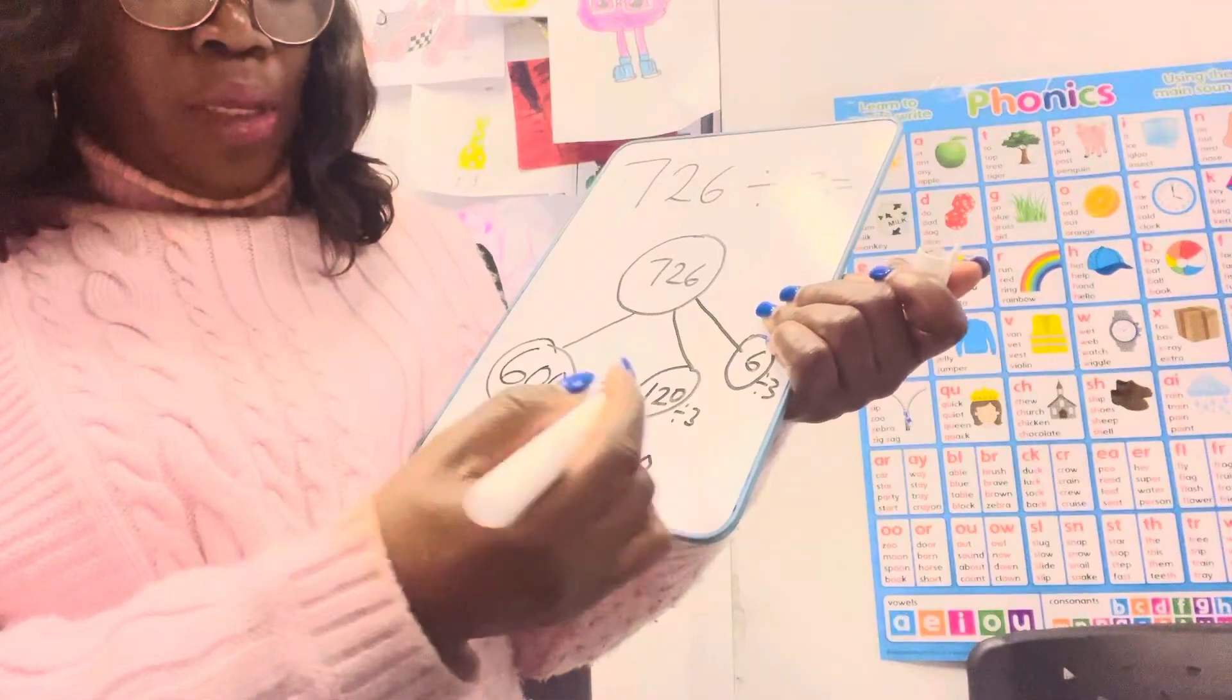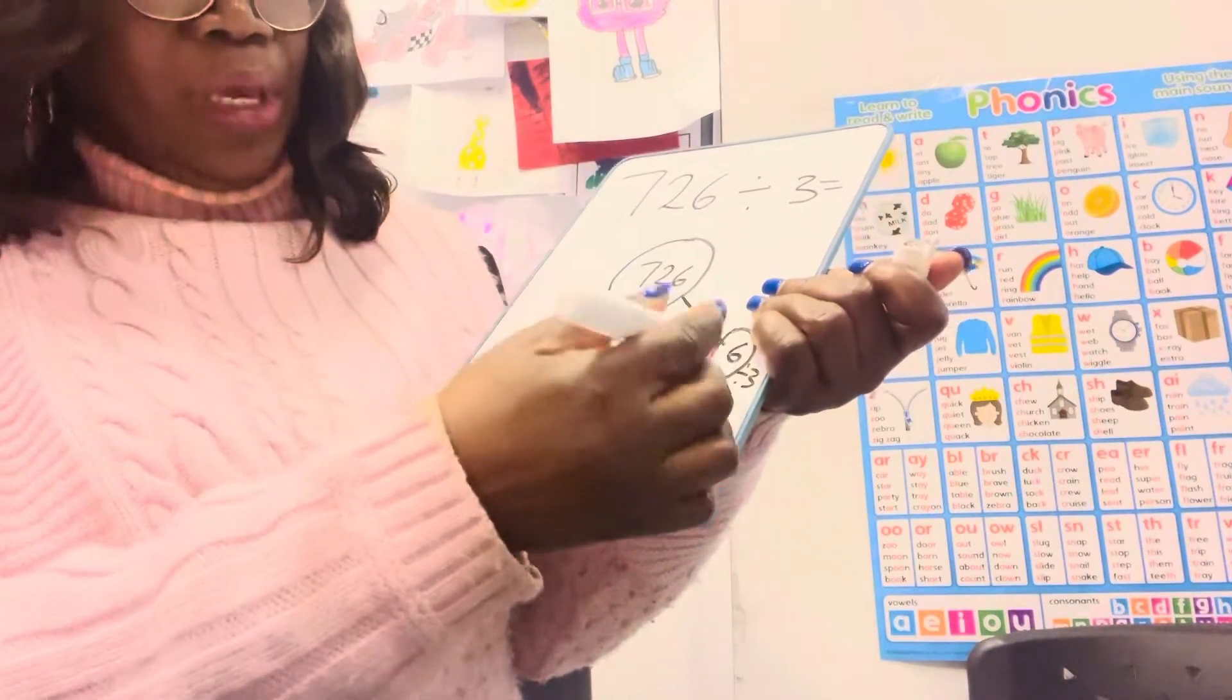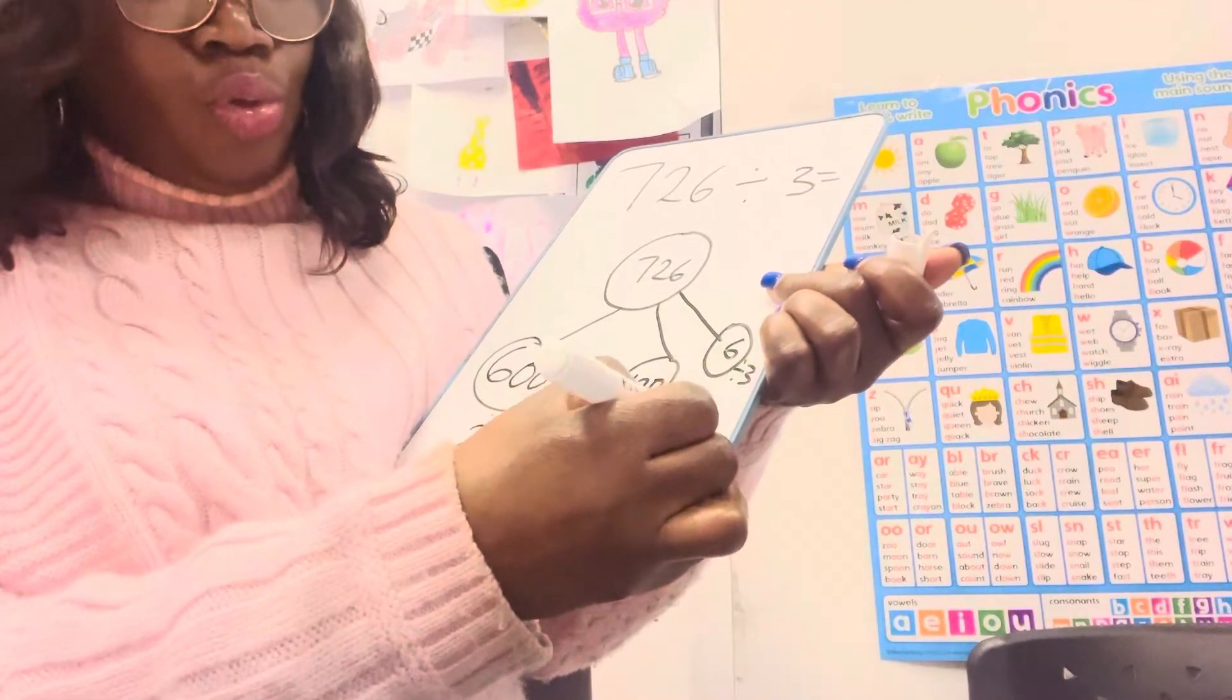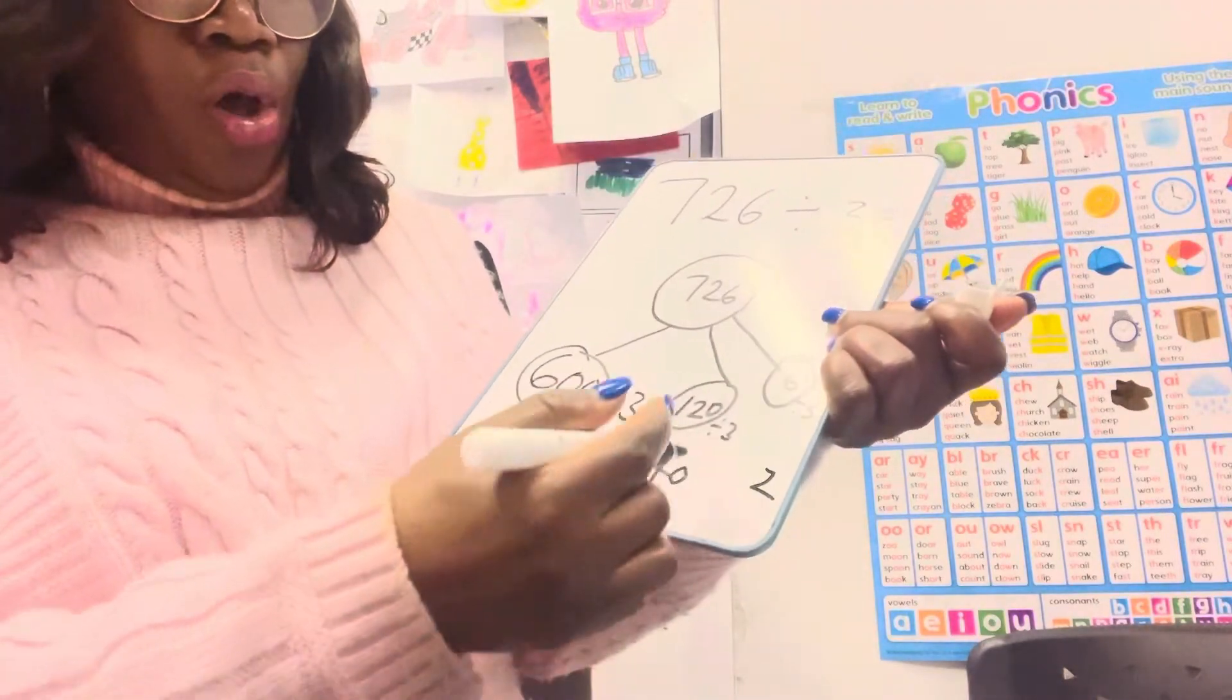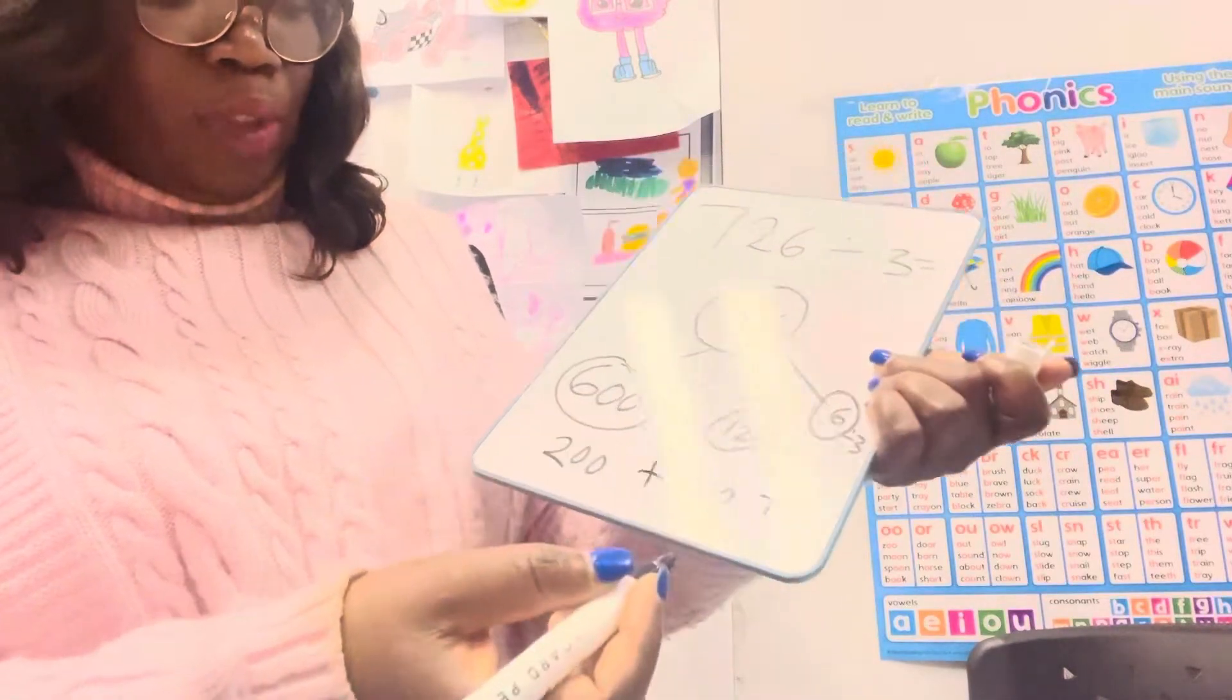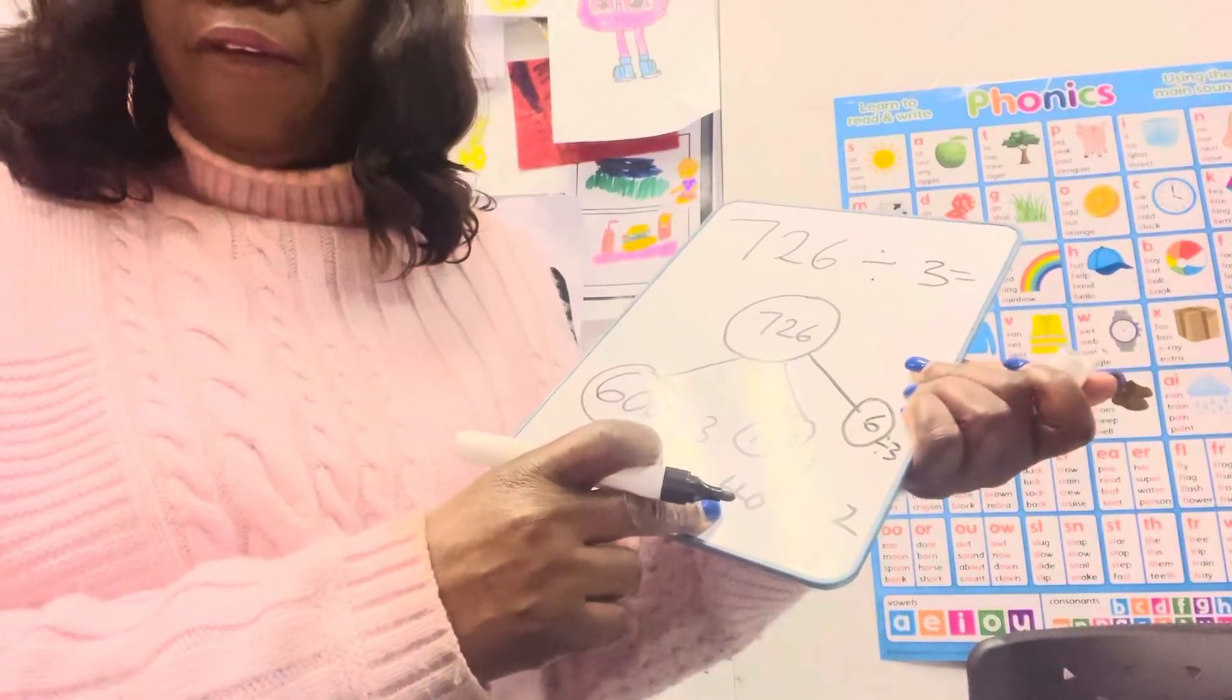And we know there is a zero next to 120, so it'll be 40. Okay, so the next one is 6 divided by 3, which is 2.